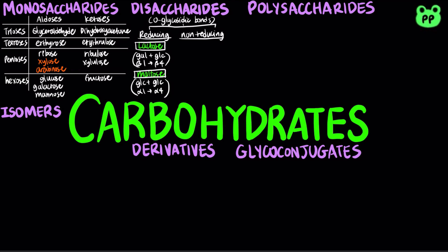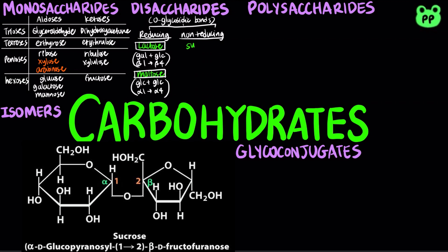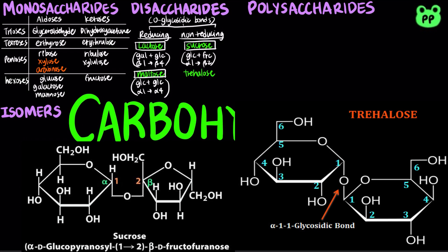Non-reducing disaccharides include sucrose, which consists of glucose and fructose linked by an alpha-1 to beta-2 glycosidic bond, as well as trehalose, which consists of two glucose linked by an alpha-1 to alpha-1 glycosidic bond.